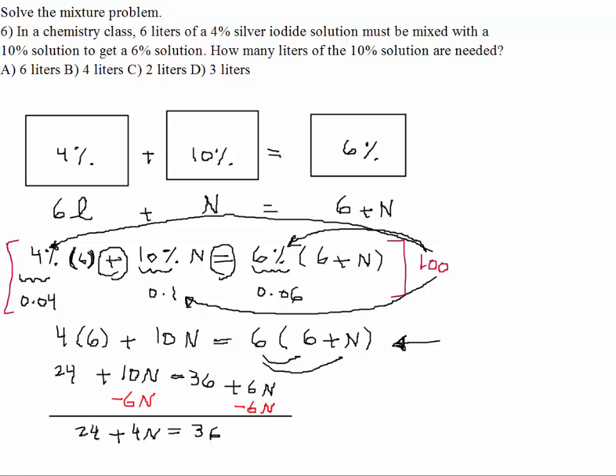And that would be 10N minus 6N would be 4N. So on the left-hand side, we get 24 plus 4N is equal to 36. And then, if I subtract 24 from both sides of the equation, let's move up here, we get 4N is equal to what? 36 minus 24 is equal to 12, right? So N is equal to 12 divided by 4. N is equal to 3, don't forget the unit, liter. 3 liters.